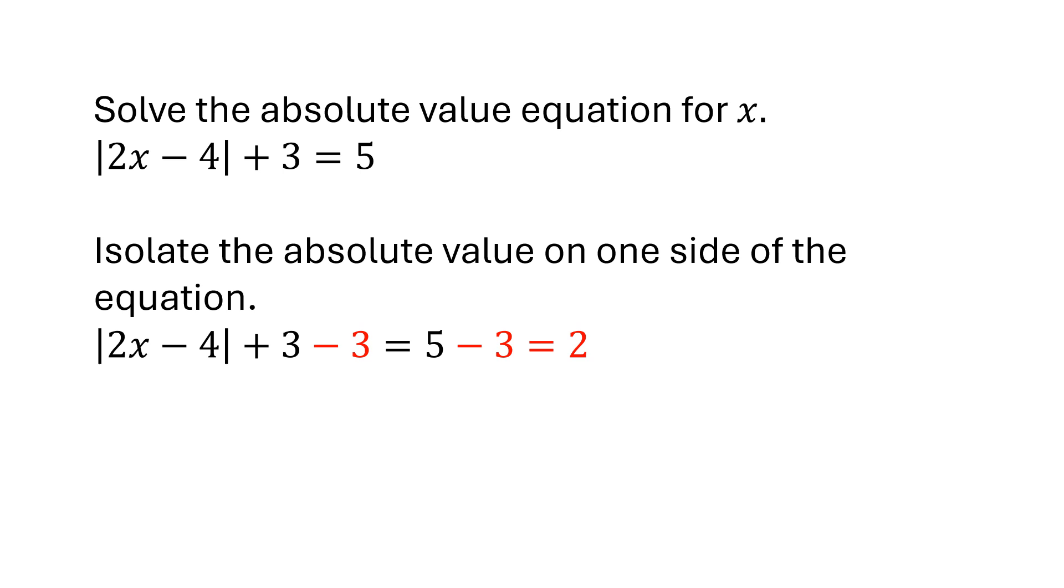First thing we have to do is isolate the absolute value on one side of the equation. |2x - 4| + 3 - 3 = 5 - 3, or 2.